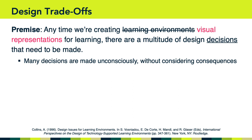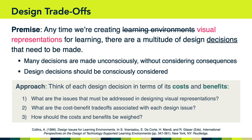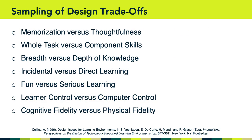Collins argued that too many of these design decisions are made unconsciously without considering their consequences. He went on to argue that it would be better if design decisions were considered consciously, and he described an approach to making deliberate design decisions. This approach involves thinking of each design decision in terms of its costs and benefits. To do so, designers must ask: what are the issues that must be addressed in designing visual representations? What are the cost-benefit trade-offs associated with each design issue? And ultimately, how should the costs and benefits be weighed?